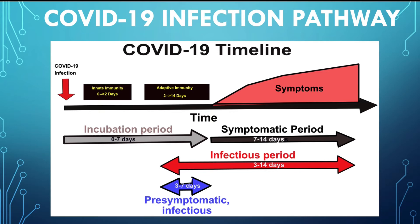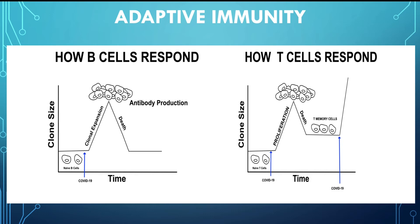The innate immune period generally occurs in the first two days of infection, while the adaptive immune period generally starts on day two to day 14 of infection. The symptomatic period usually takes place from day seven to day 14, and the infection period occurs between day three and day 14. The B and T cells of the adaptive immune system are mainly responsible for protecting us from a foreign invader that has overwhelmed our innate immune system. These cells respond to a specific invader, while the white blood cells of the innate immune system respond to non-specific invaders, much like our police, fire, and healthcare first responders.